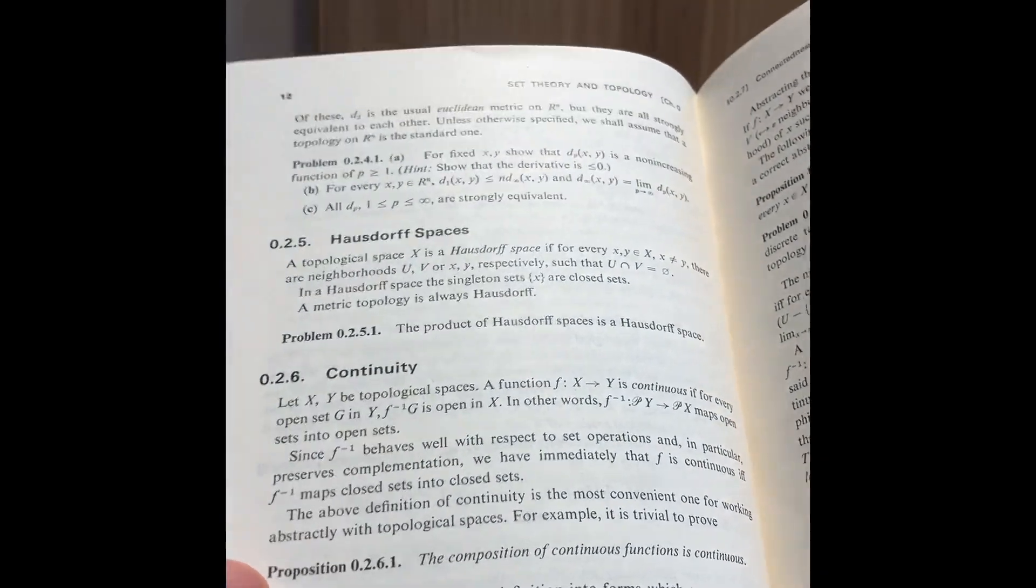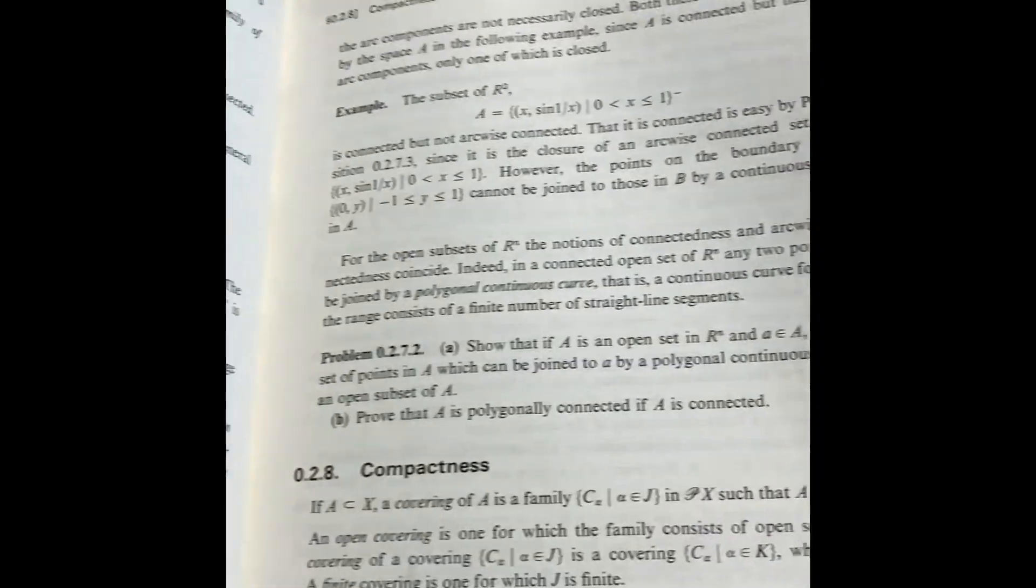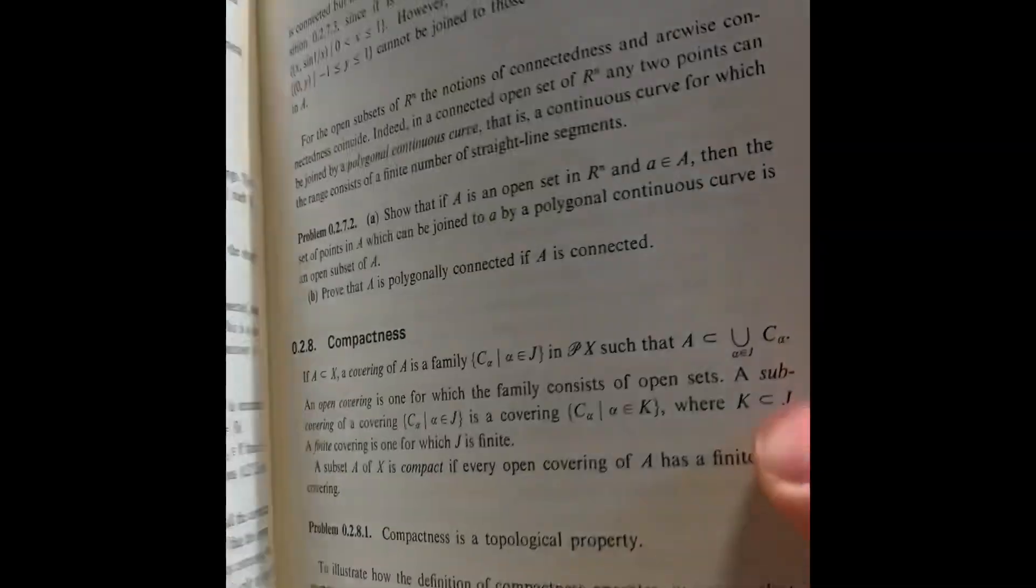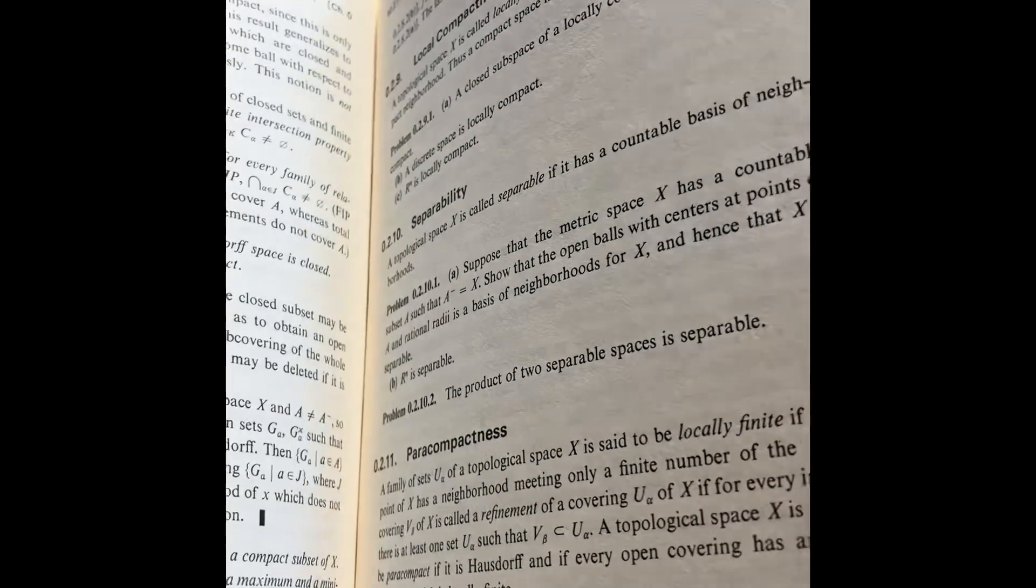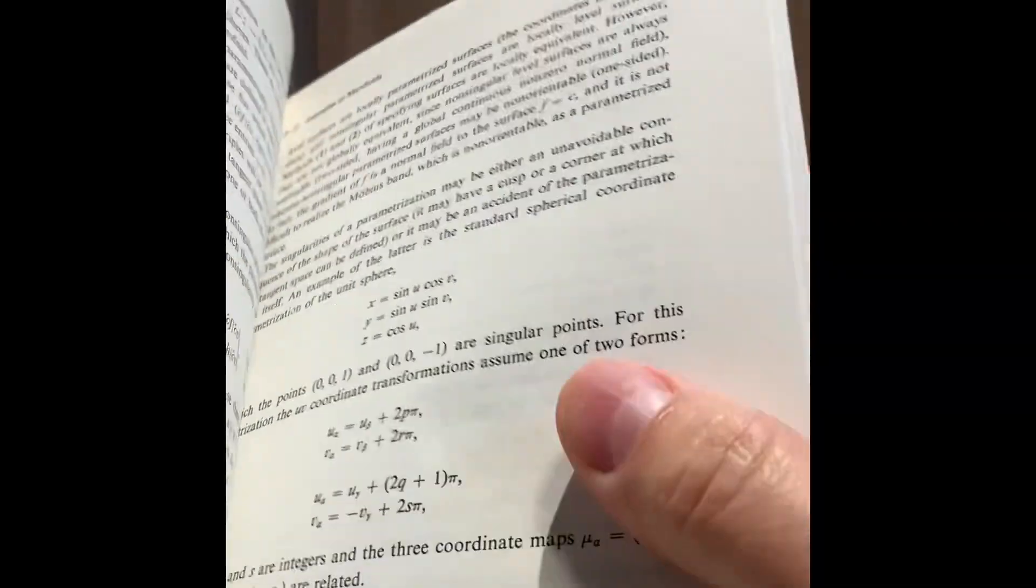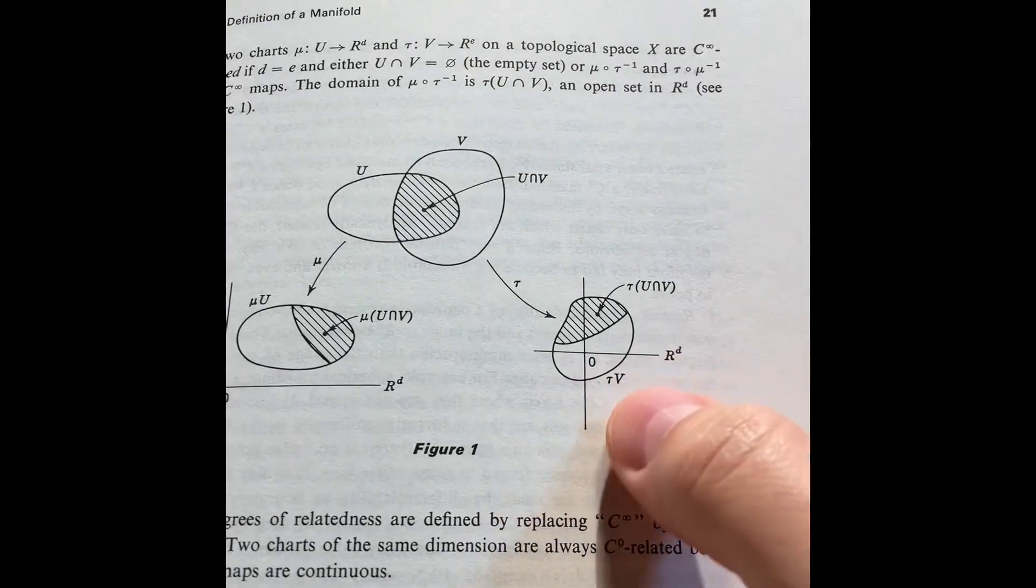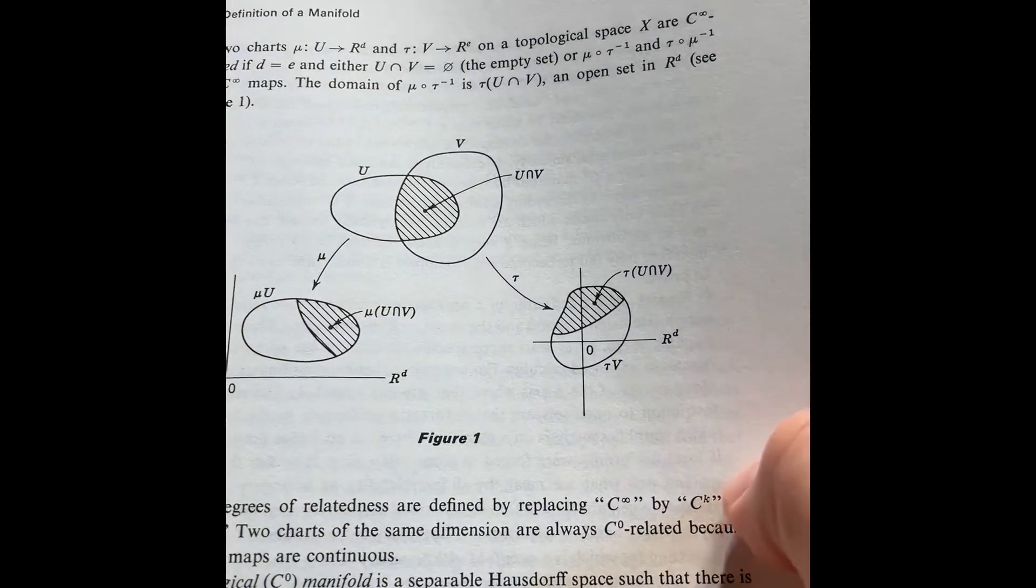So they start with basic topology here. Hausdorff spaces, continuity, compactness down here. And they move on to the definition of a manifold here. So this is the typical depiction of a manifold.